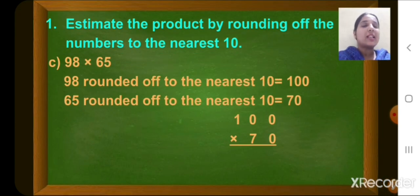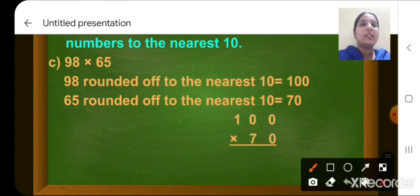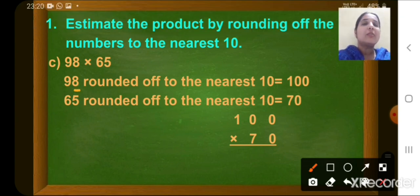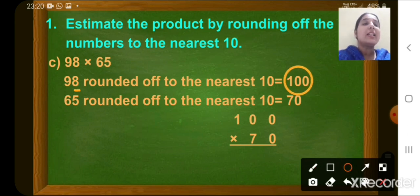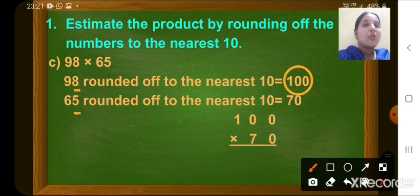Question number C is 98 multiplied by 65. First we will round off 98 to nearest 10. Look at the digit at the 1's place — it is 8, which is more than 5. So the round off of 98 will be 100. Now look at the second number, 65. The digit at the 1's place is 5. So the round off of 65 to nearest 10 will be 70.